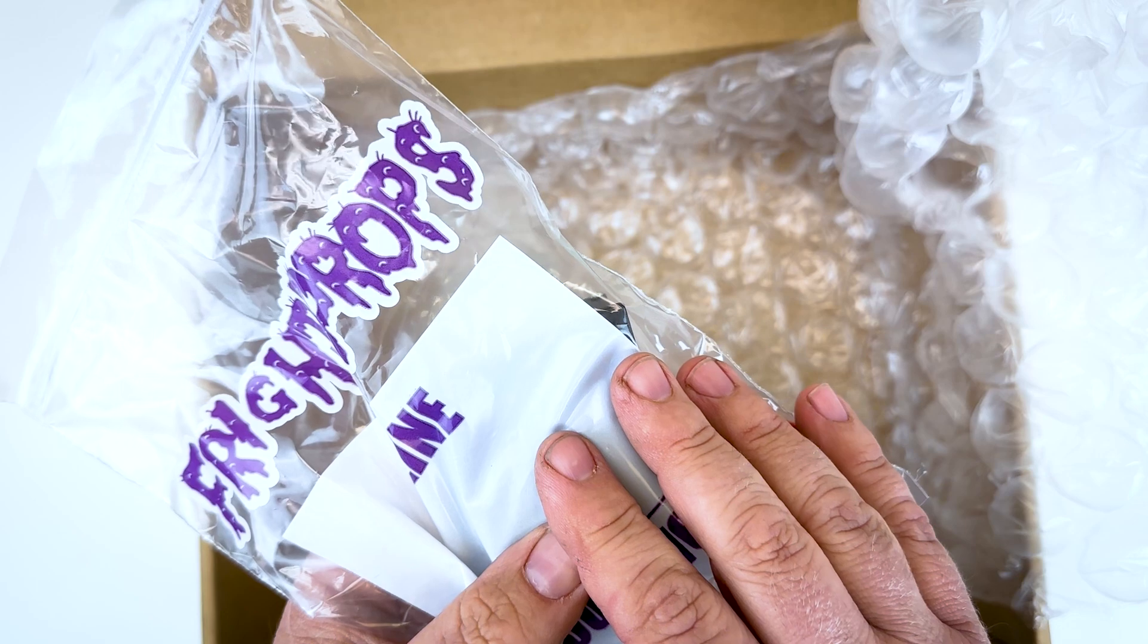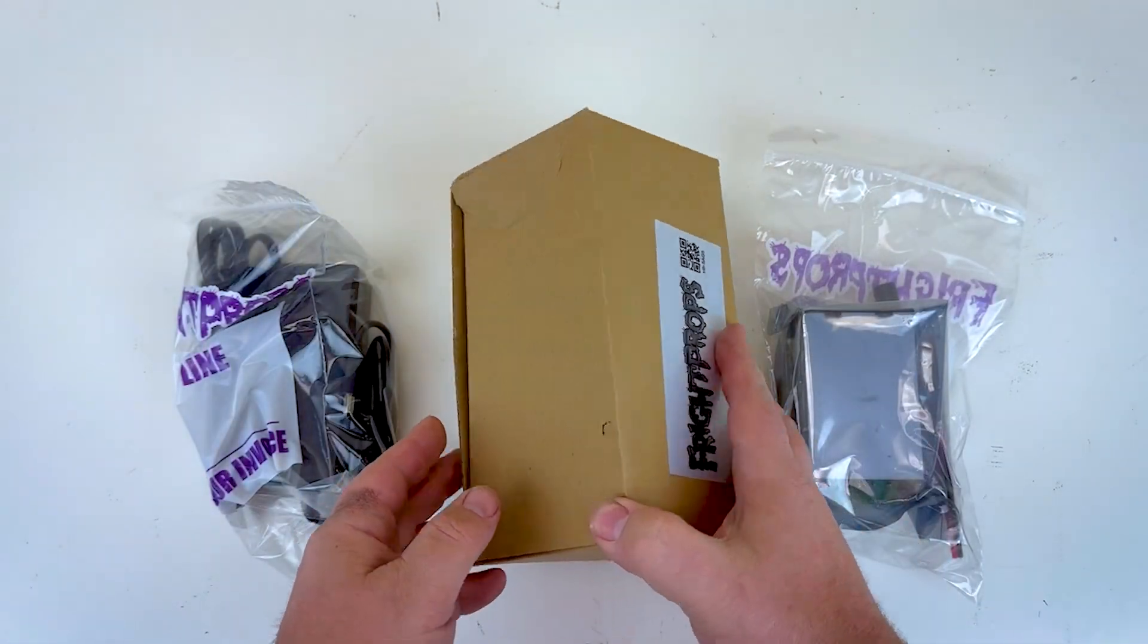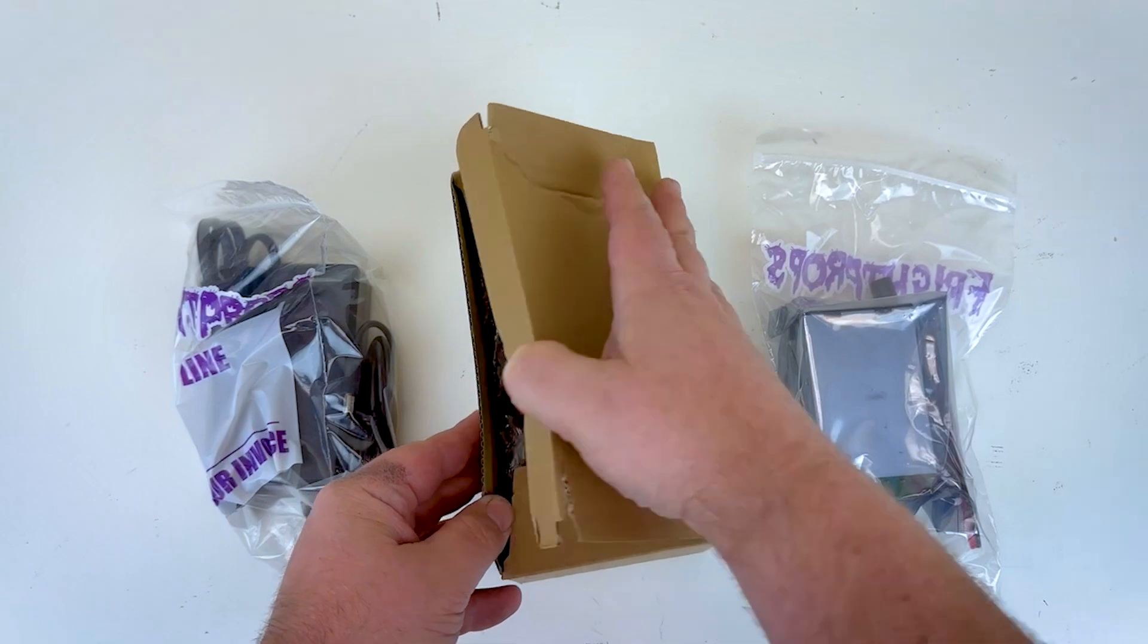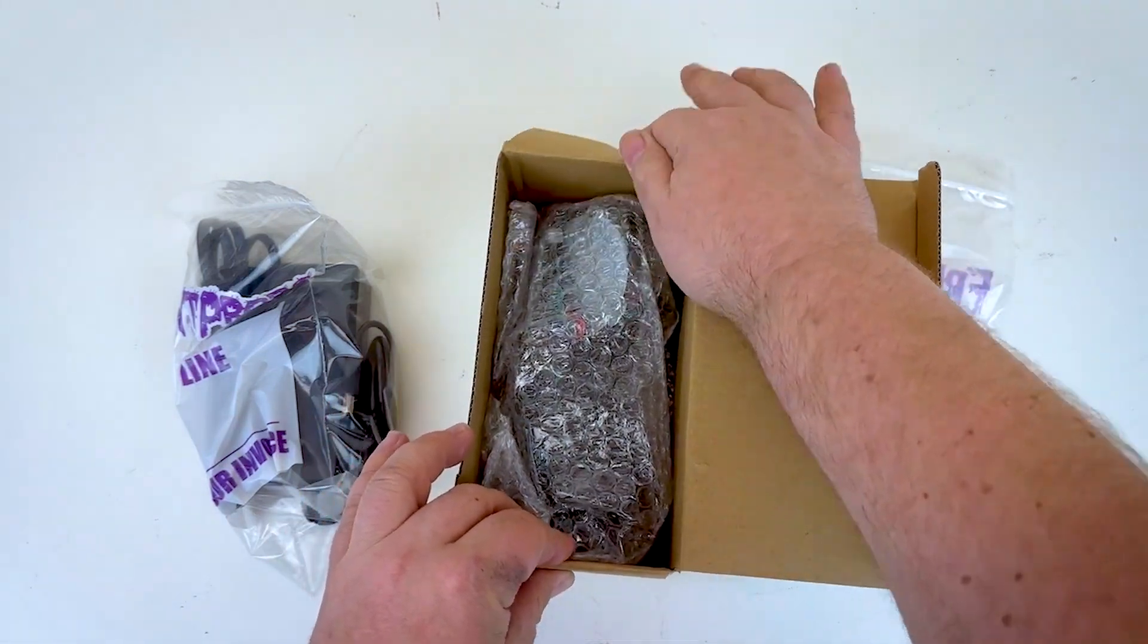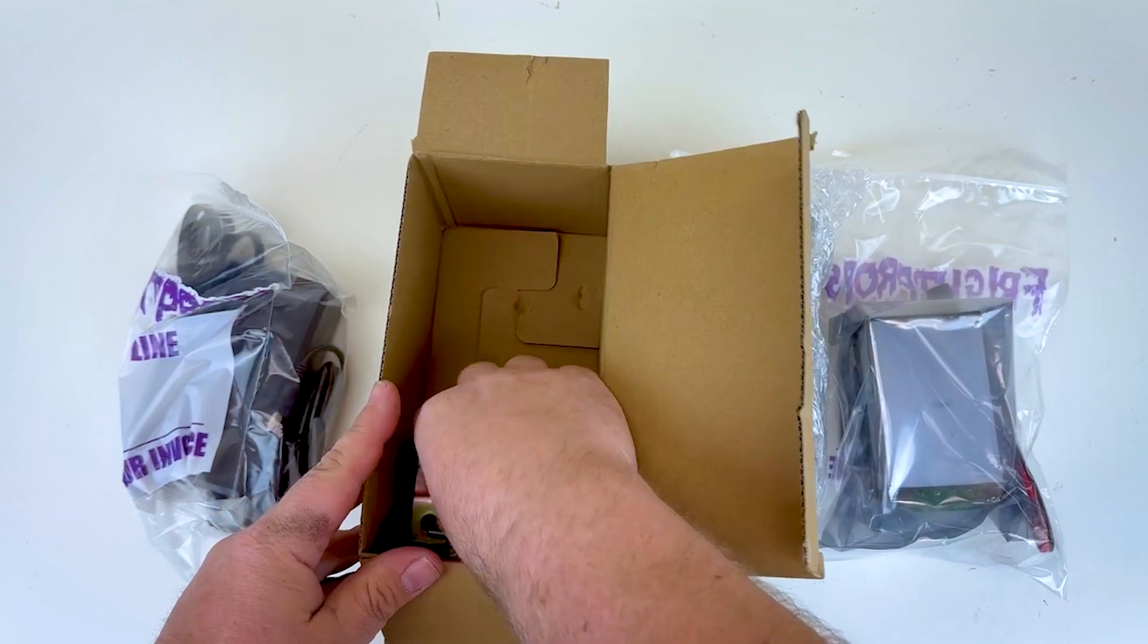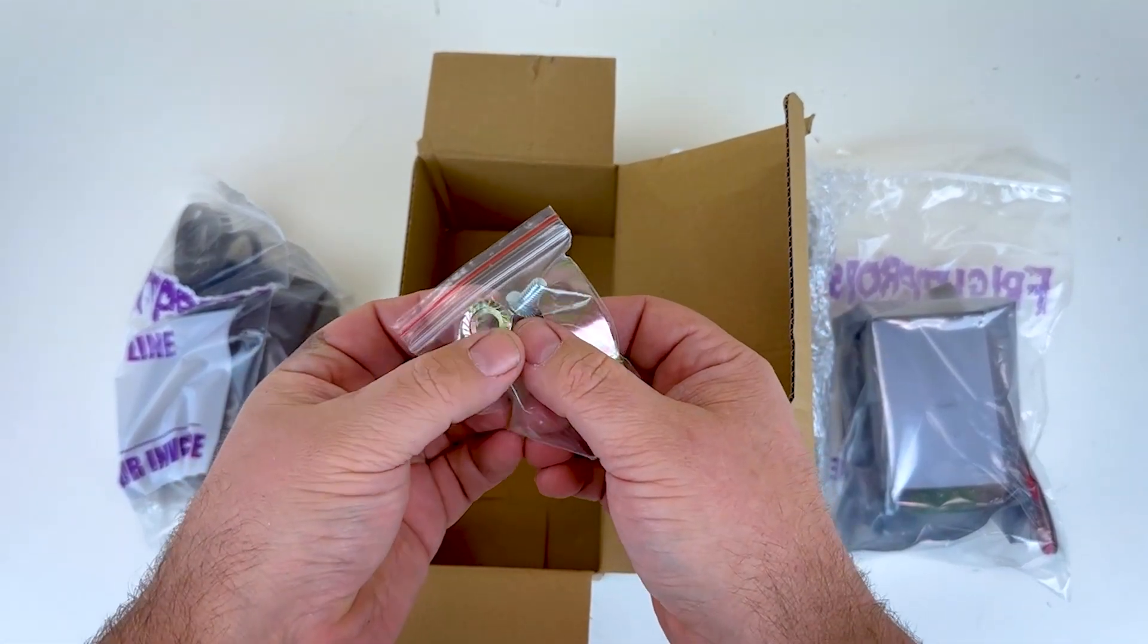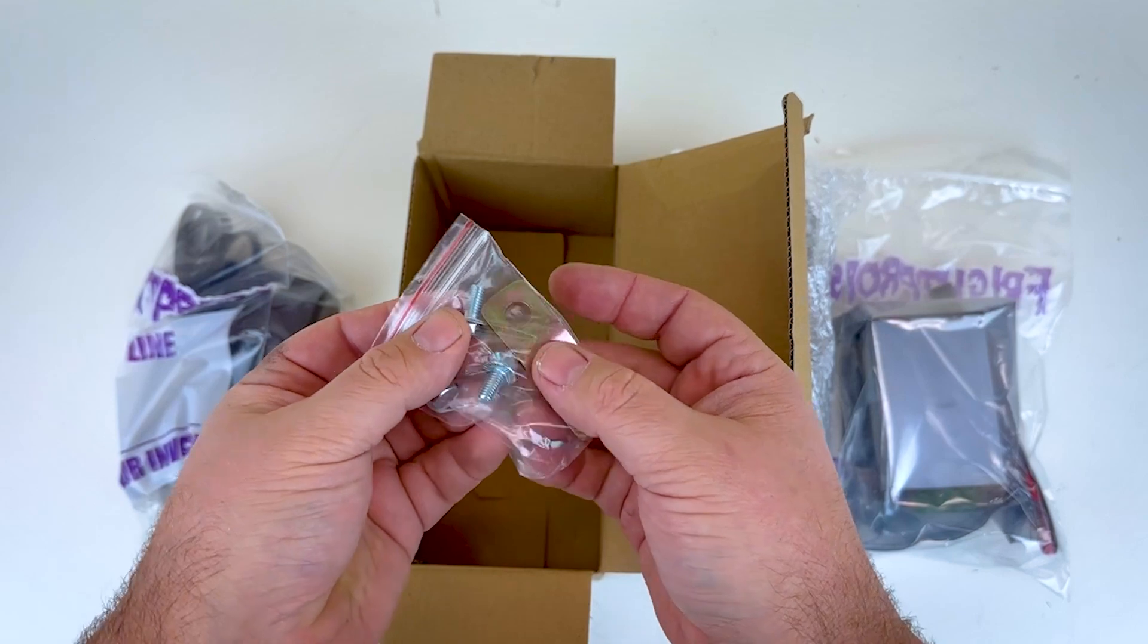Now we'll go ahead and get everything set up and show you how it works. Let's go ahead and open up the motor here and remove the motor itself. Inside the box you're also going to find the motor shaft arm with the shaft nut to attach it to the motor shaft and then three bolts for mounting the motor.